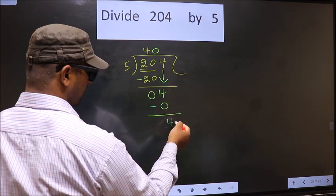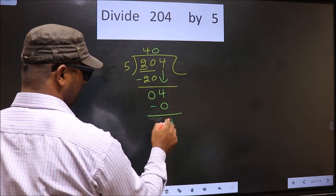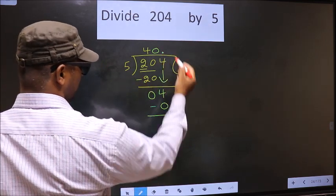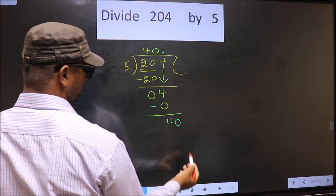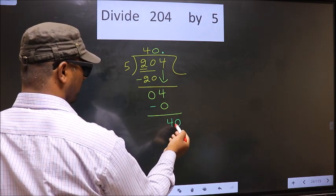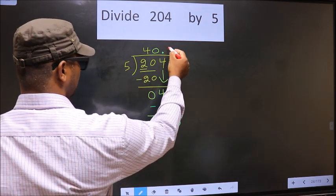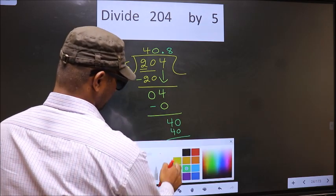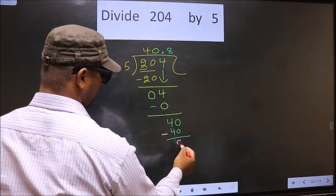Over here, we did not bring any number down. And 4 is smaller than 5. So, now, we can put a dot. So, now, we can put a dot and take 0 here. Here, we have 40. When do we get 40 in 5 table? 5 eights, 40.